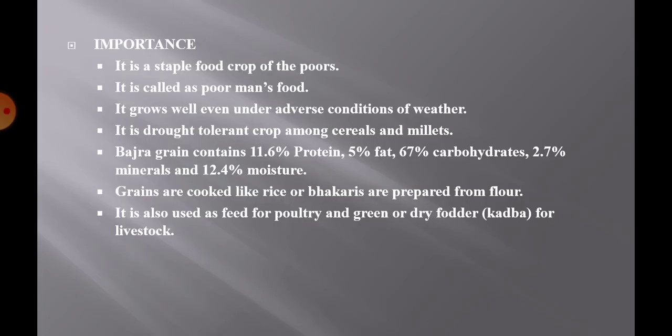First of all we will see the importance of pearl millet. It is a staple food crop of the poor and that's why it is called a poor man's food. It grows very well under adverse weather conditions and is a drought-tolerant crop among cereals and millets.